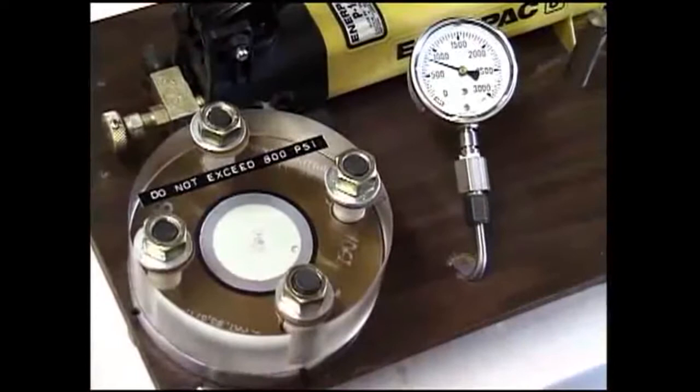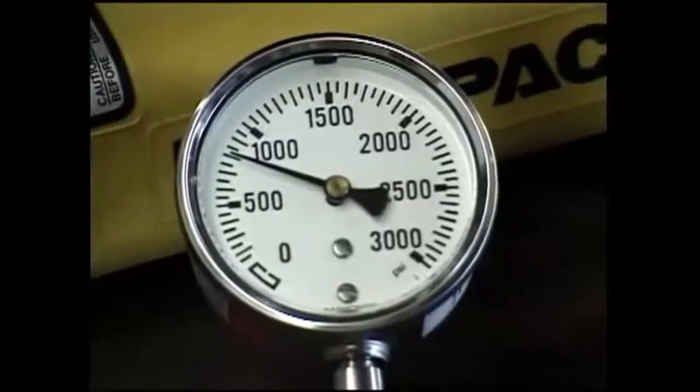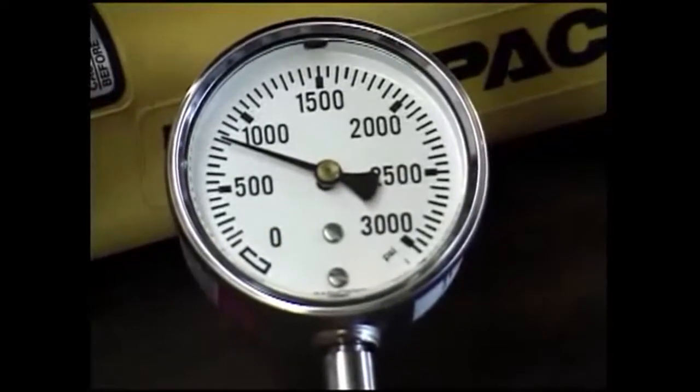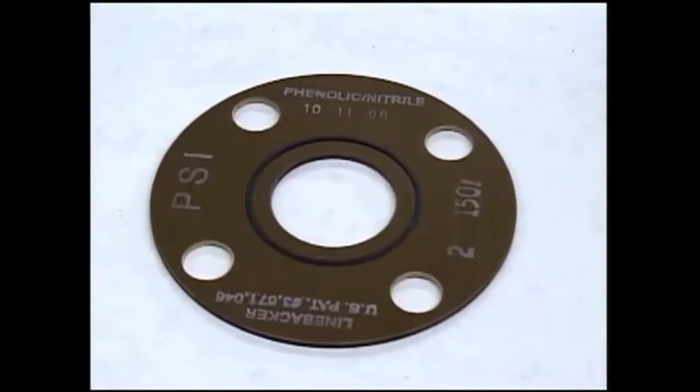But that's exactly the point, as we'll now demonstrate how the linebacker will easily hold over 800 pounds of pressure with the same torque applied to the flange nuts. First, a few notes on the linebacker gasket.